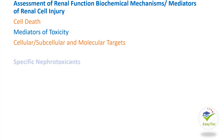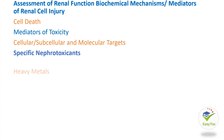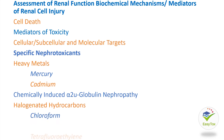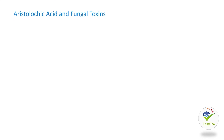Next is specific nephrotoxicants, which includes heavy metals such as mercury and cadmium, chemically induced alpha-2u globulin nephropathy, halogenated hydrocarbons including chloroform and tetrafluoroethylene, aristolochic acid, and fungal toxins.